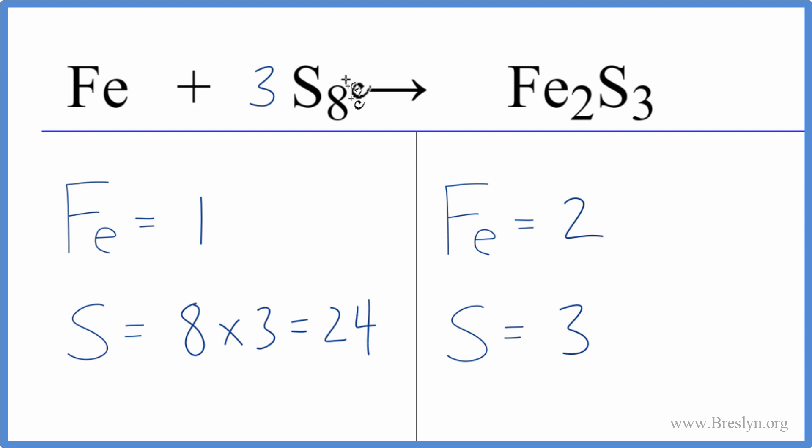On the product side, I'm going to put the 8 in front of the Fe2S3 because the 8 applies to everything. So now, 3 times 8, that gives me 24. So these are balanced.